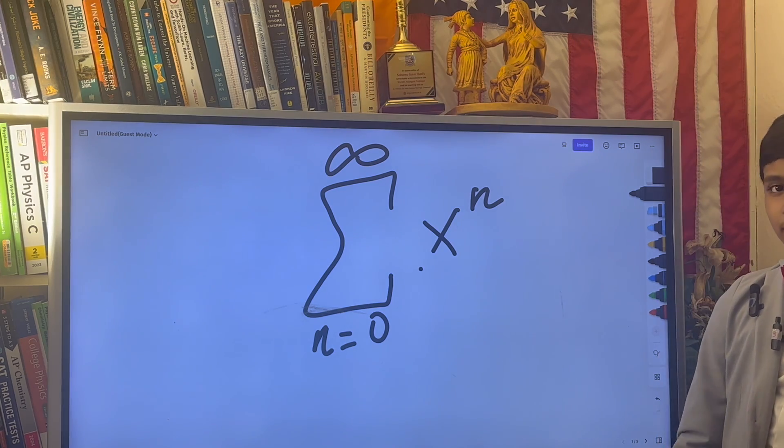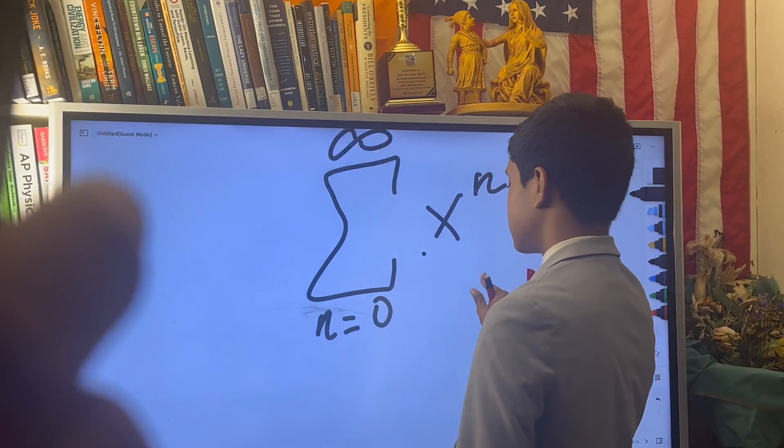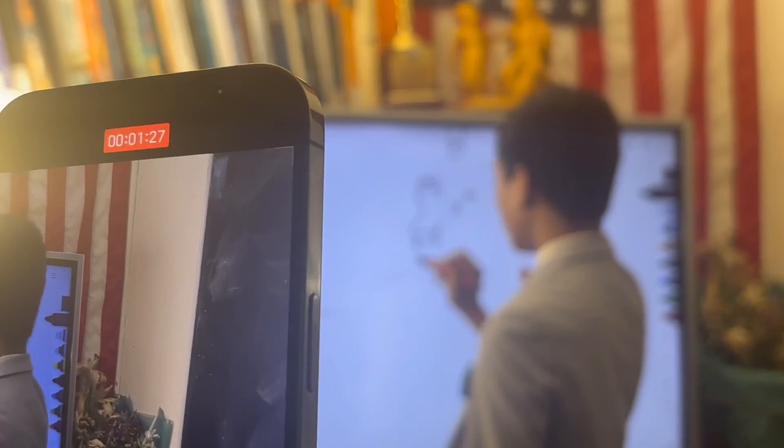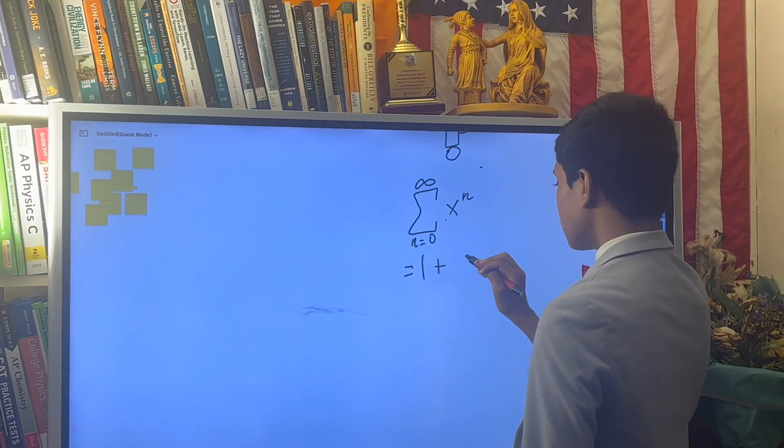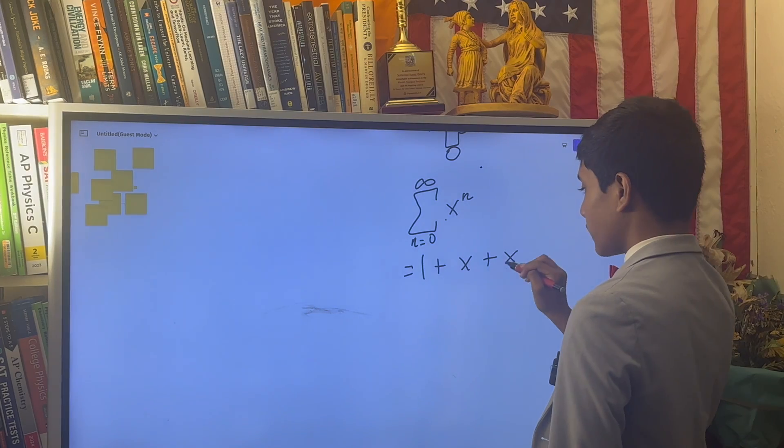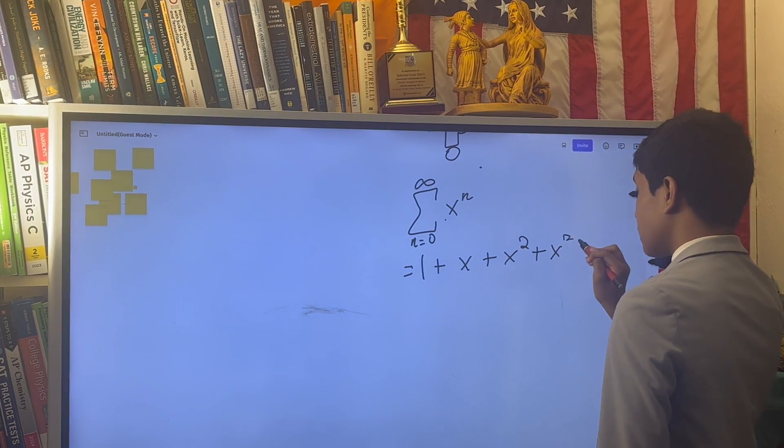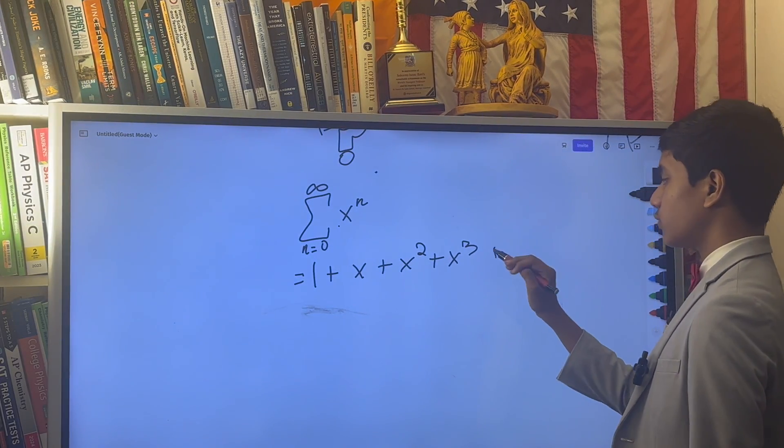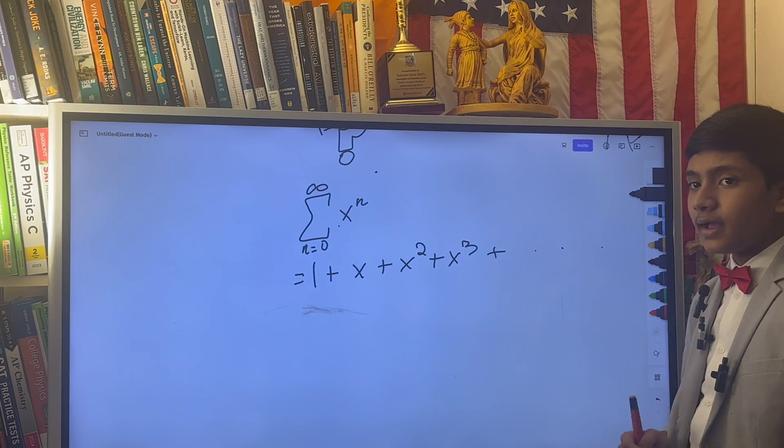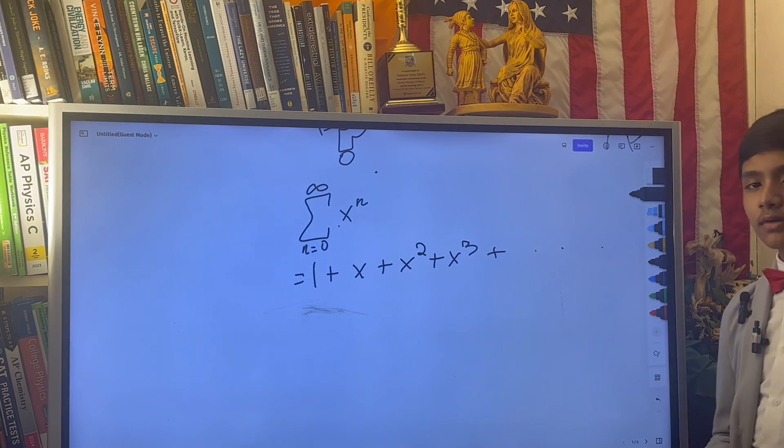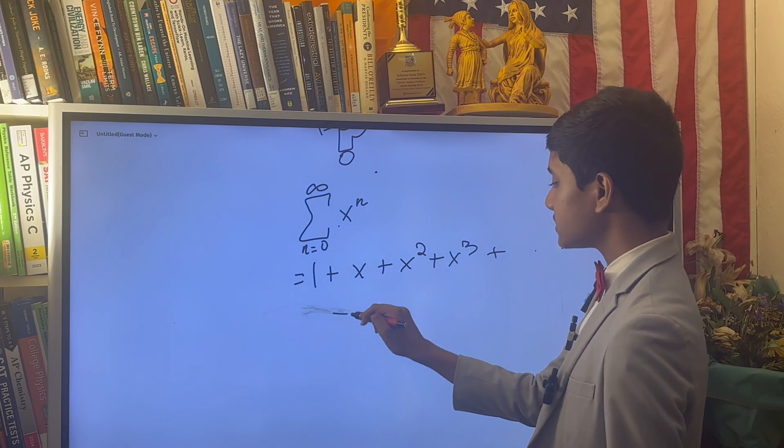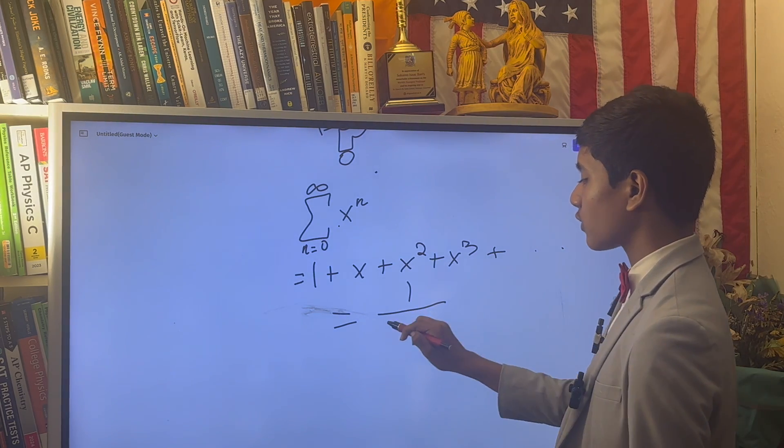And, I mean, that's pretty much it. So it starts off as 1 plus x plus x squared plus x cubed plus x to the fourth, and so on and so forth. And there's a pretty easy proof that this is just equal to 1 over 1 minus x.